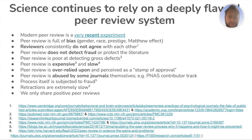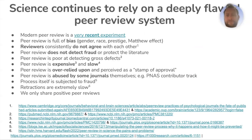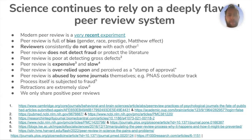We continue to rely on this very deeply flawed system of peer review. You send your manuscript to a journal; the editor may or may not send it out for peer review. If they do, normally two to three reviewers who are supposed to be our peers look at that paper and suggest improvements. Peer review in its current form has only been done regularly since the 1970s — it is a very recent experiment. It is full of bias: gender, race, prestige, the Matthew effect. Reviewers do not agree with each other on what needs improving, what's good or bad, or whether it should be published.